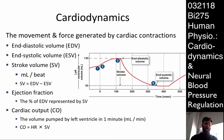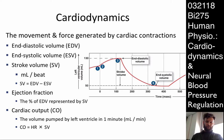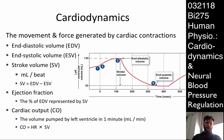End systolic volume is the volume of the heart at the end of contraction. So the difference between those is called the stroke volume — that's how much blood, measured in milliliters or CCs, is being ejected per stroke or per beat.